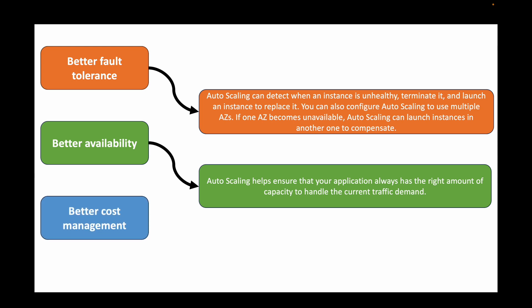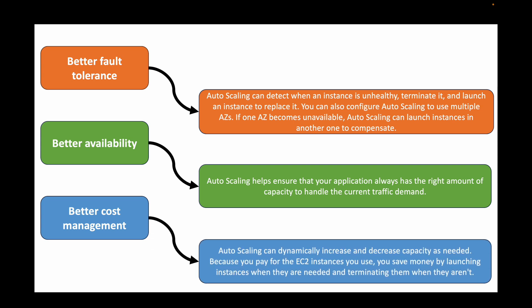The final benefit is better cost management, which is very important. Instead of manually managing scalability, we might end up over-provisioning and spending too much money. With auto scaling groups, because we have automated scalability, we only pay when servers are actually needed. Auto scaling can dynamically increase and decrease capacity as needed, and because we only pay for the EC2 instances we use, we save money by launching instances when needed and terminating them when they're not.